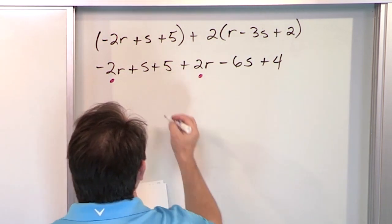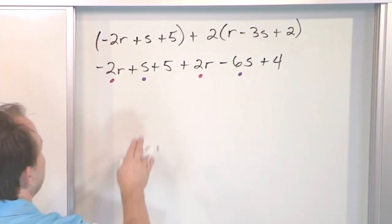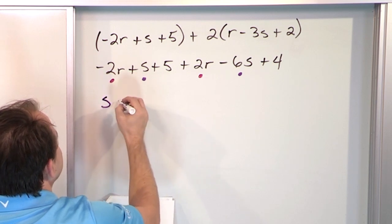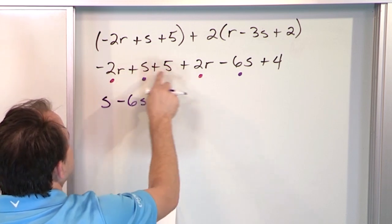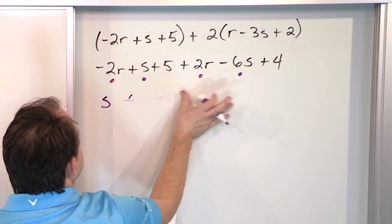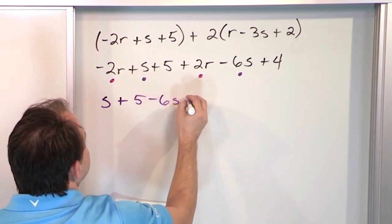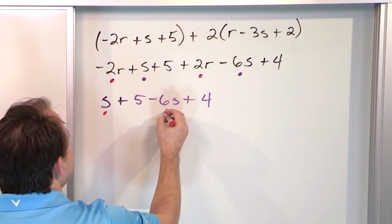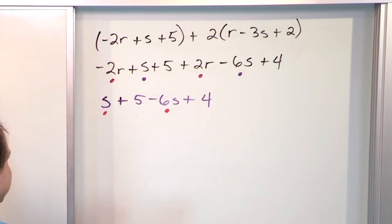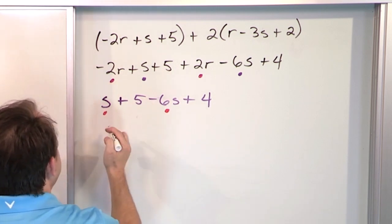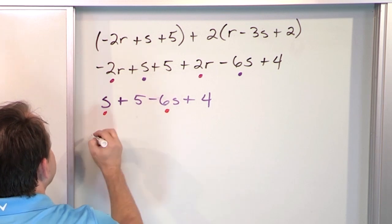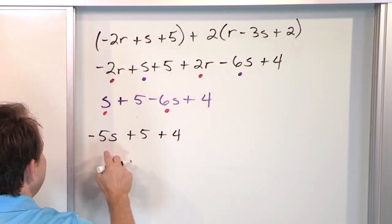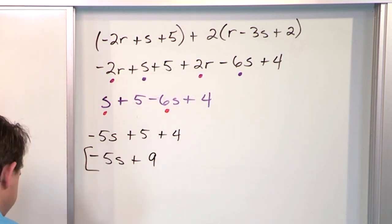After the r terms cancel to 0, we rewrite the remaining terms: s plus 5 minus 6s plus 4. Now collect like terms with s: 1s minus 6s. That's 1 plus a negative 6 — subtract: 6 minus 1 is 5, sign goes with the larger absolute value so it's negative 5s. We still have plus 5 and plus 4, which adds to 9. Final answer: negative 5s plus 9.